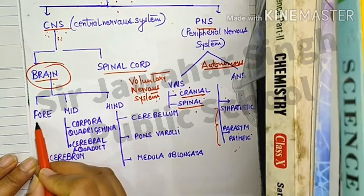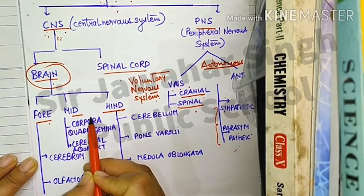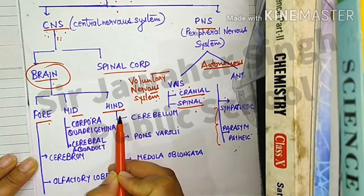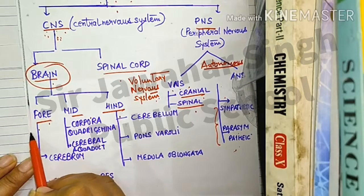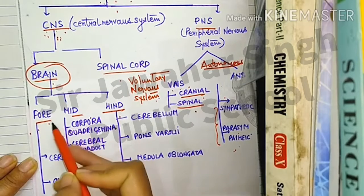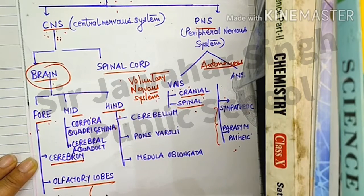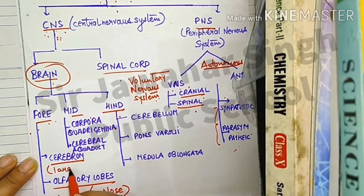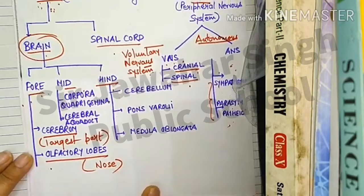The brain is further divided into three major parts: forebrain, midbrain, and hindbrain. The forebrain has two major parts: cerebrum, which is the largest part of the brain, and olfactory lobes, which are present in the nose.